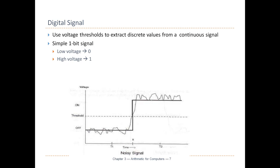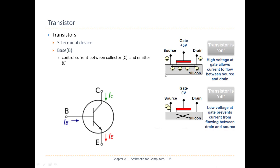And high voltage represents binary number one. So if you go back to see this little thing, you will see — for example, if you look at terminal C — depending on whether B is high voltage (one) or low voltage (zero), C will have the corresponding value as well. If B is high voltage, the transistor is on, electricity will flow through, and the voltage of C will become zero. If B is zero, then this is disconnected, so the voltage of C will be higher — this became one.